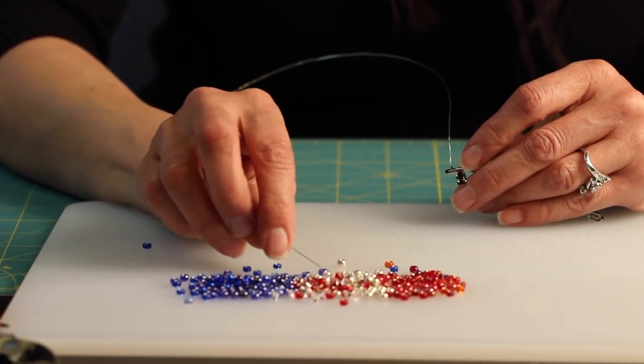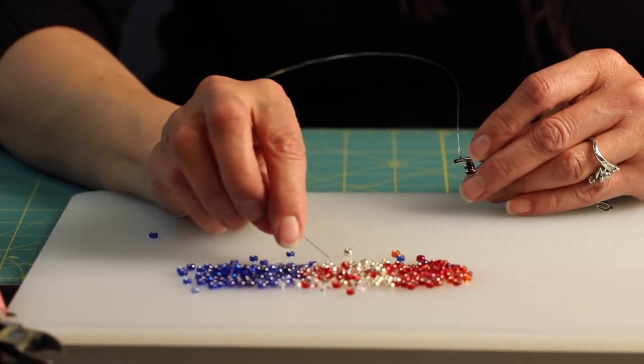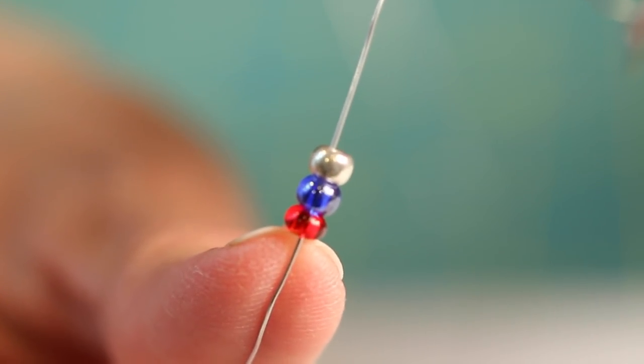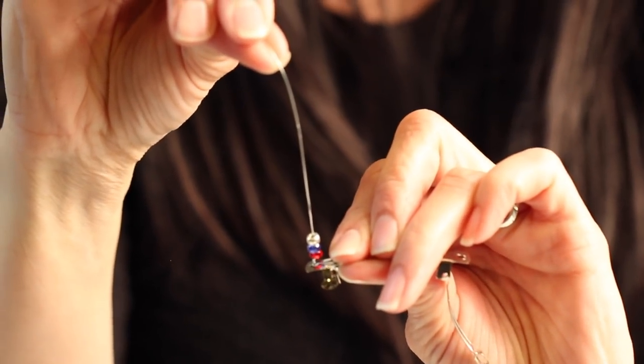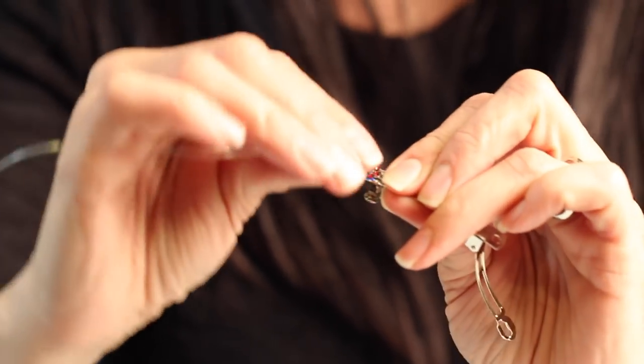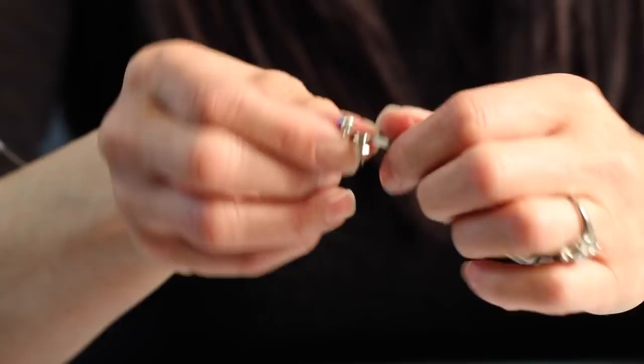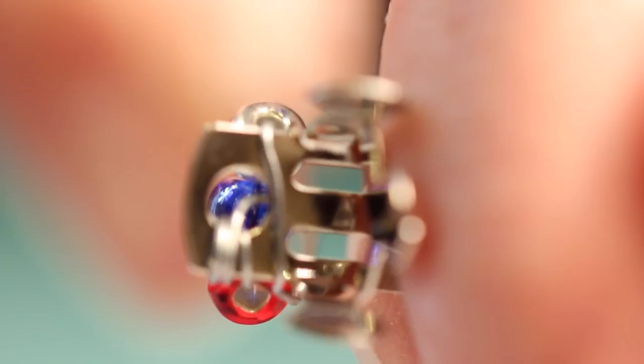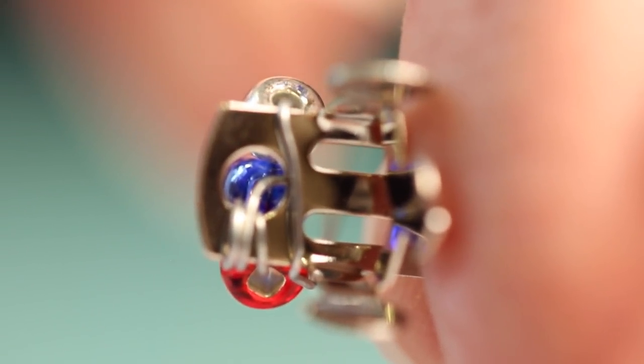Now start threading your beads onto your wire. You'll thread three on in a color pattern that you like. Pull them down towards the clip and lay them over the top of the clip at the very end, and then wrap the wire around once.